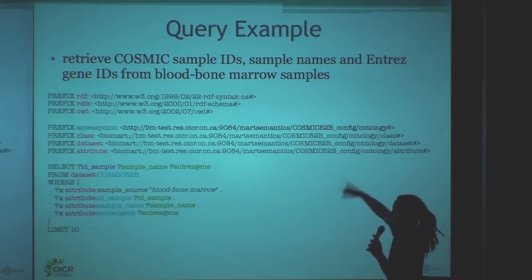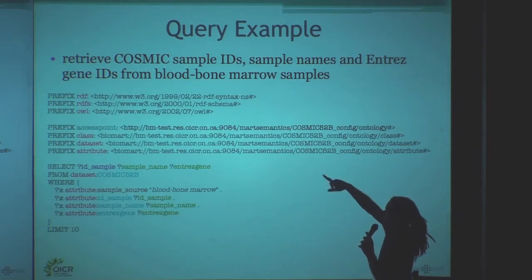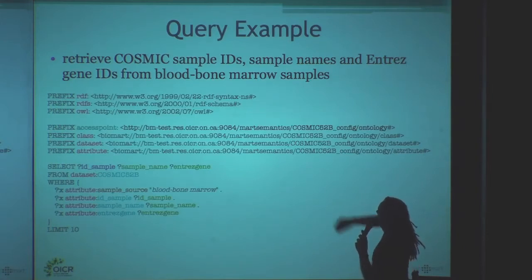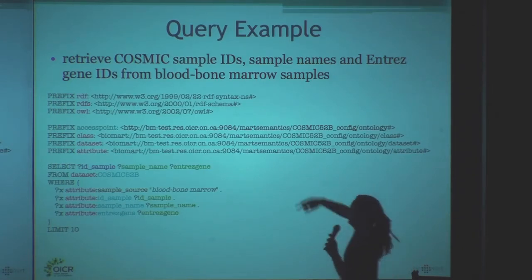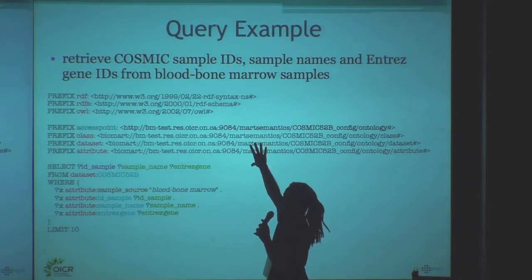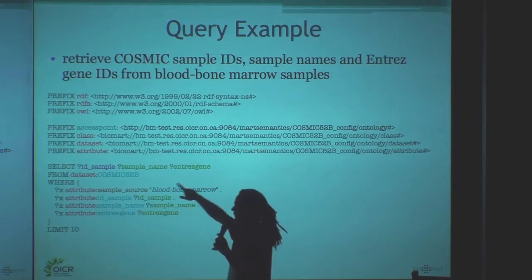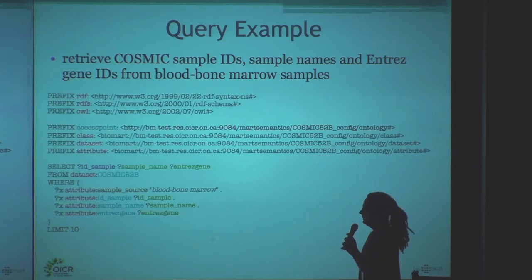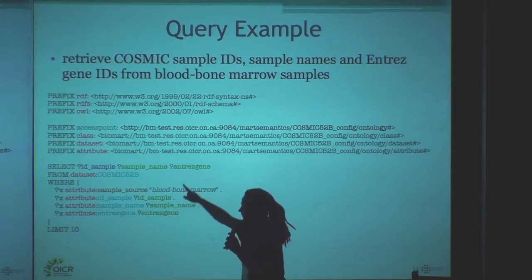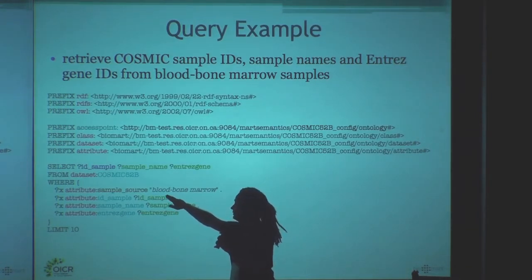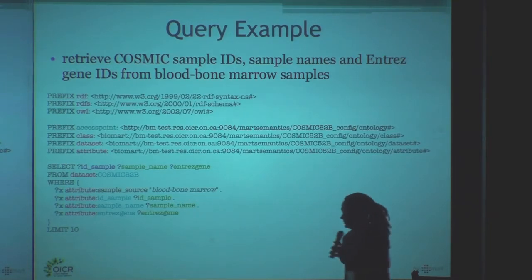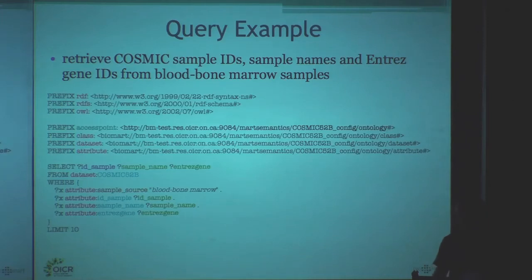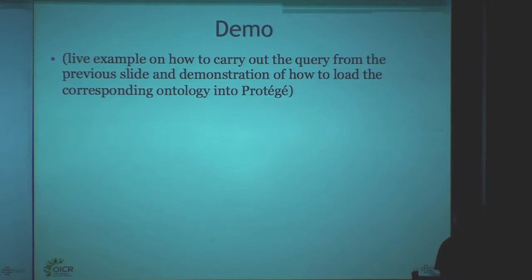A query looks like this — you probably know this format. Here it says: give me all Cosmic sample IDs, sample names, and ontology gene IDs, from the BioMart example databases. Here you have a small header which has to be pretty much always the same. Then you SELECT, say where you want it from — here from Cosmic — there is a dataset, then you get the attributes here, and you say the filter is bone marrow, which should apply to sample source. These queries can actually be automatically generated from the web interface, which I can show.